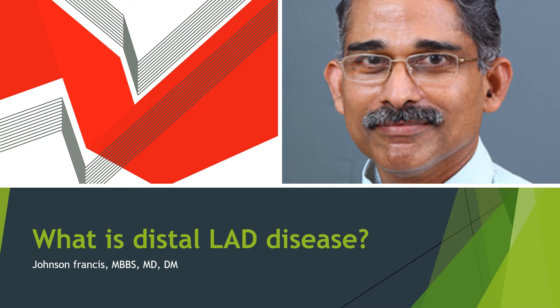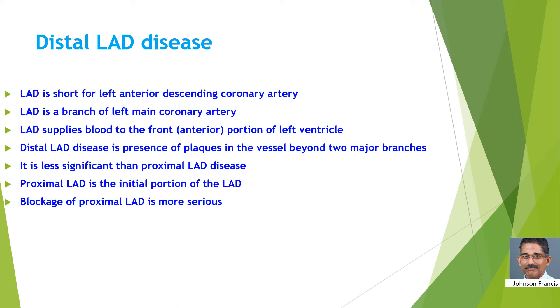LAD is the major blood vessel supplying the front part of the heart. LAD is short for left anterior descending coronary artery. It is a branch of the left main coronary artery. LAD supplies blood to the anterior portion of the left ventricle, which is the lower muscular chamber of the heart.